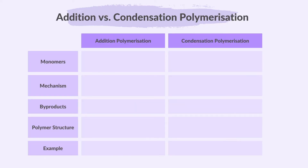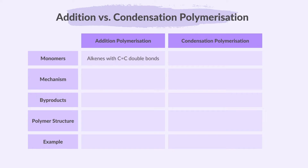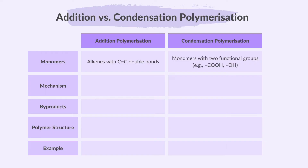Next, we will describe the differences between addition and condensation polymerization. Addition polymerization involves alkene monomers, or unsaturated compounds that contain a carbon-carbon double bond. Condensation polymerization involves two different monomers with two different functional groups, such as a dicarboxylic acid and a diol, or a dicarboxylic acid and a diamine.